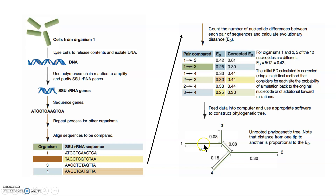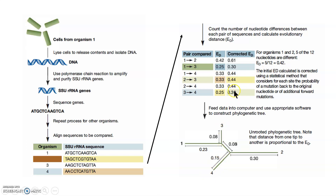On the phylogenetic tree, you can see organism 3 and organism 4, and the numbers on the branches indicate the branch lengths, which show evolutionary distance between two organisms. You'll notice the numbers on the branches are not 0.25, but if you add up 0.08, 0.08, and 0.15, you do actually get to that evolutionary distance value.